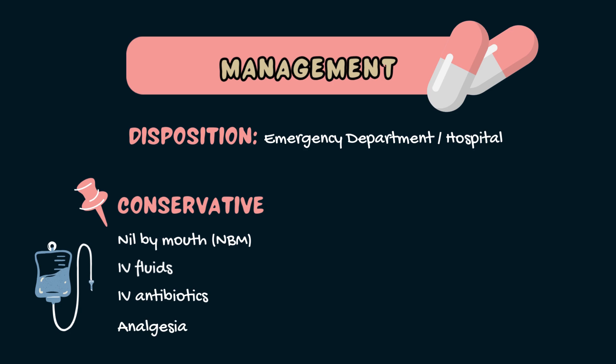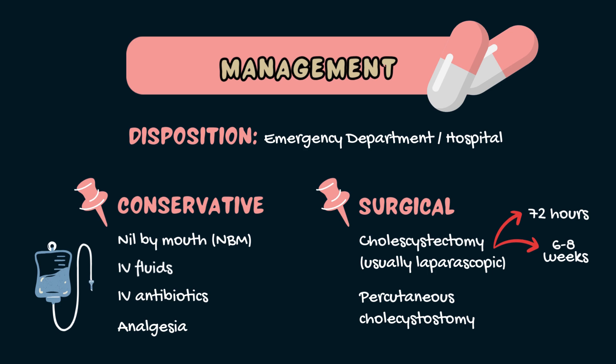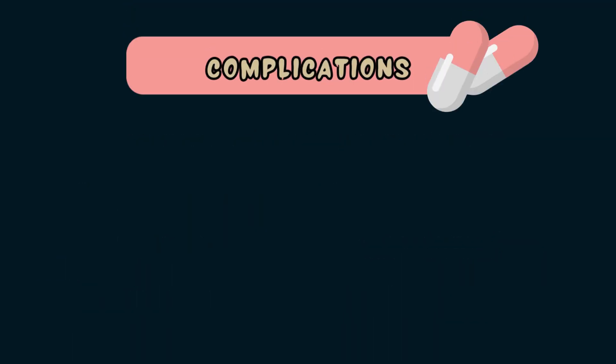Definitive management is surgical, which involves the removal of the gallbladder. This is called a cholecystectomy and is usually done laparoscopically, or as keyhole surgery. Ideally, it's done within 72 hours for acute cases. However, it can be delayed by six to eight weeks in some cases to allow the acute inflammation to settle. If the patient has acalculus cholecystitis or they're critically unwell, they may receive a percutaneous cholecystostomy, which is when a drain is inserted into the gallbladder to allow the infected material to be removed.